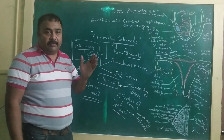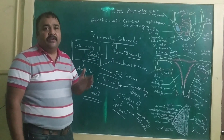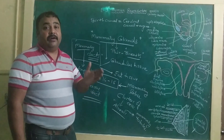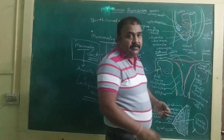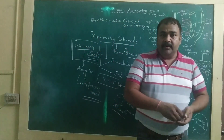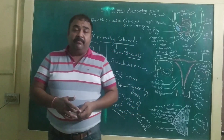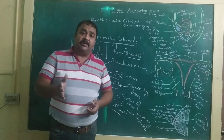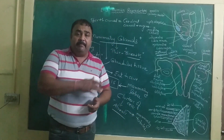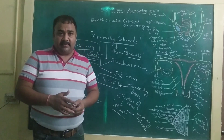This was all about the female reproductive organs, accessory organs, and the female reproductive system of humans. In the next lecture, we will study about the process of spermatogenesis and the process of oogenesis. Thank you.